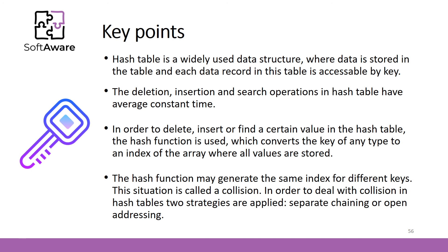The hash function may generate the same index for different keys. This situation is called collision. In order to deal with collision in hash tables, two strategies are applied. Separate chaining or open addressing.